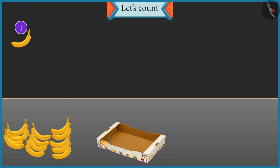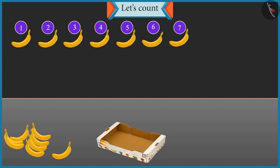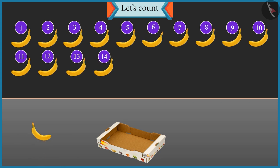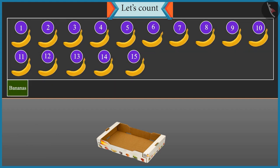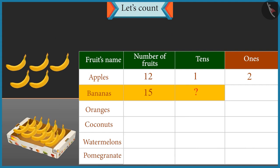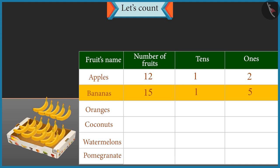One, two, three, four, five, six, seven, eight, nine, ten, eleven, twelve, thirteen, fourteen and fifteen. There are fifteen bananas. How many tens are there in fifteen? A group of ten will be formed, so there is one tens in fifteen. And how many ones are there? There are five bananas left, so there are five ones.